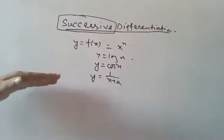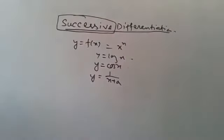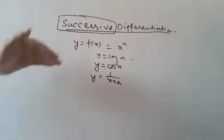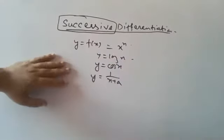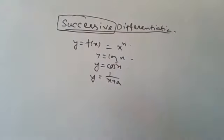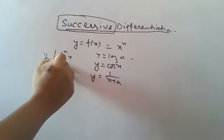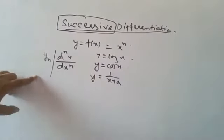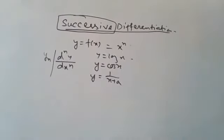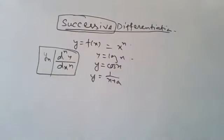We know about the derivative. Successive means we are looking at what we know about the second order and third order derivatives. In this chapter, we find the nth derivative of a function. We denote yn by dny by dxn. That's how we denote this symbol — yn is dny by dxn.